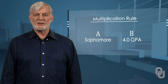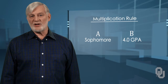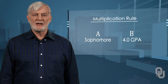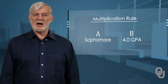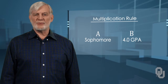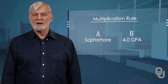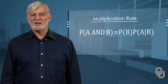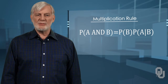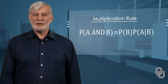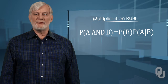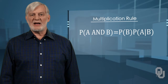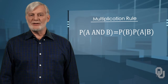If A and B are two events, such as being a sophomore and having a four-point GPA, then to find the probability of drawing a person with both conditions, the probability formula is: probability of A and B equals probability of B times the probability of A given B.